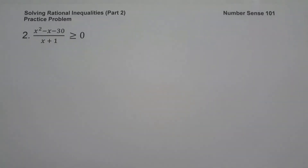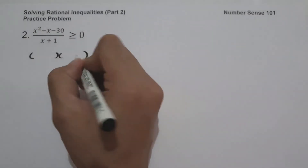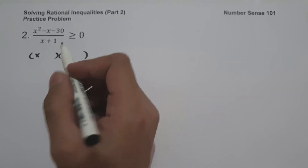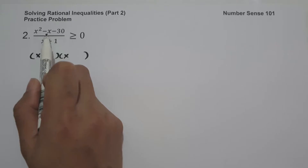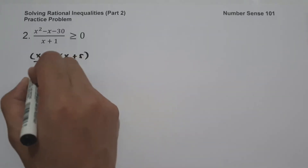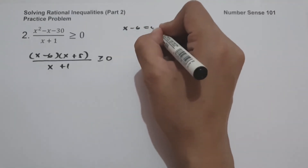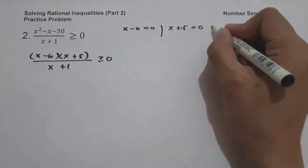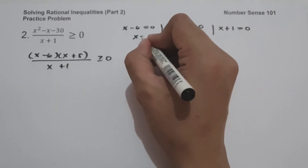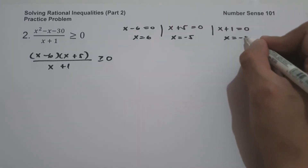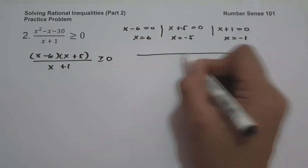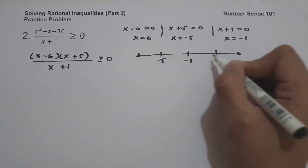On example number 2, we have (x squared minus x minus 30) all over (x plus 1) greater than or equal to 0. Since one side is already equal to 0, we factor the numerator. The factors of x squared minus x minus 30 are (x minus 6)(x plus 5), because negative 6 times positive 5 is negative 30 and their sum is negative 1. So we equate x minus 6 equal to 0, x plus 5 equal to 0, and x plus 1 equal to 0, giving x equals 6, x equals negative 5, and x equals negative 1.